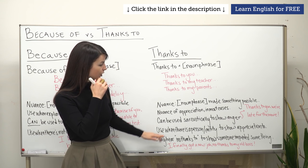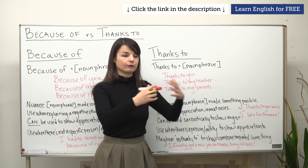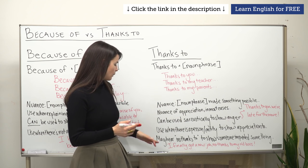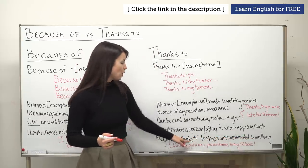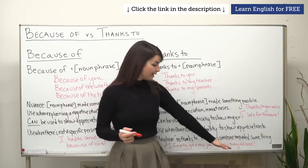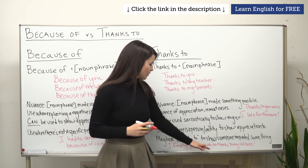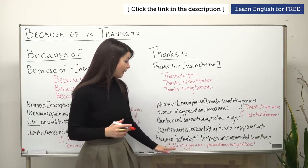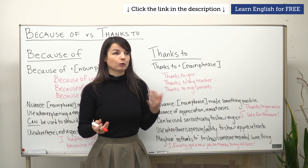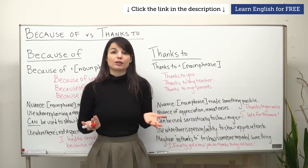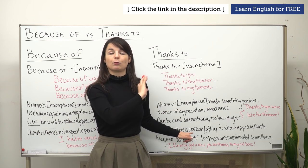You might also hear the expression 'no thanks to,' used to show that someone impeded something — meaning they got in the way or made it difficult. For example: 'I finally got a new job, no thanks to my old boss.' After 'no thanks to,' we have a noun phrase — in this case, 'my old boss.' So 'no thanks to' shows no appreciation for something. There's still a positive result, but the person didn't help — or perhaps tried to make it difficult. It shows no appreciation for that person or entity.